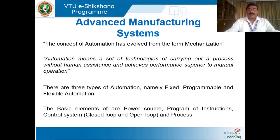The basic elements of any automation system include a power source, a program of instructions, and a control system. We will discuss what exactly open loop and closed loop systems are in the succeeding slides.